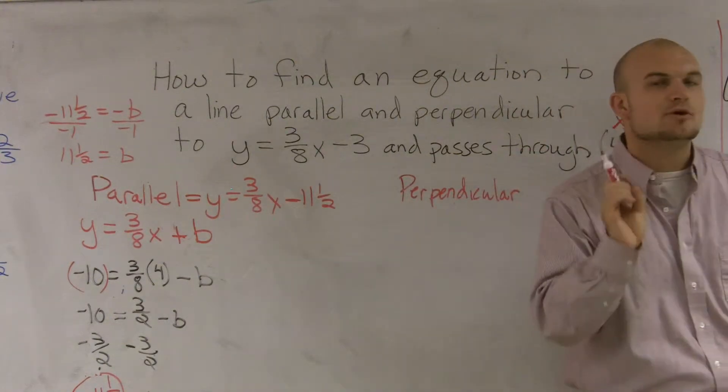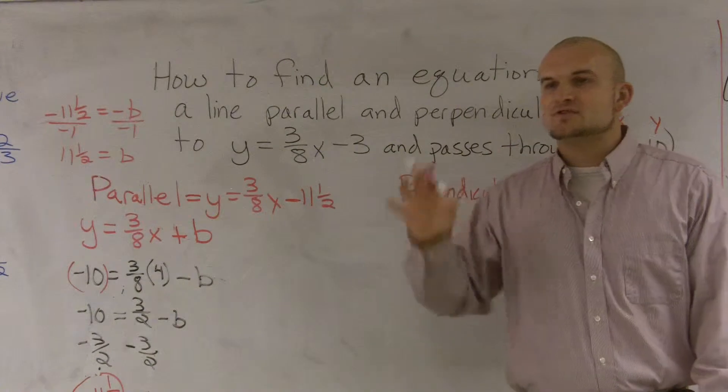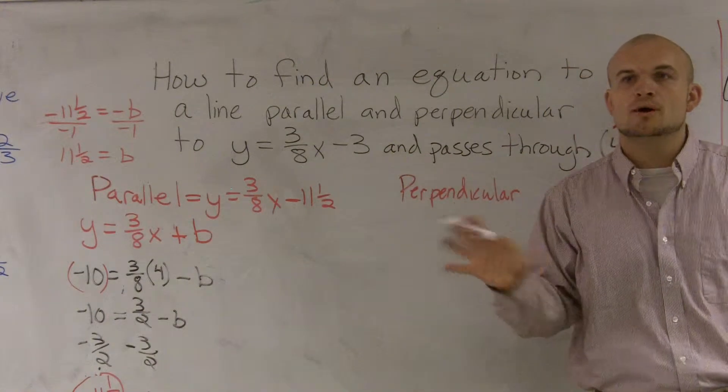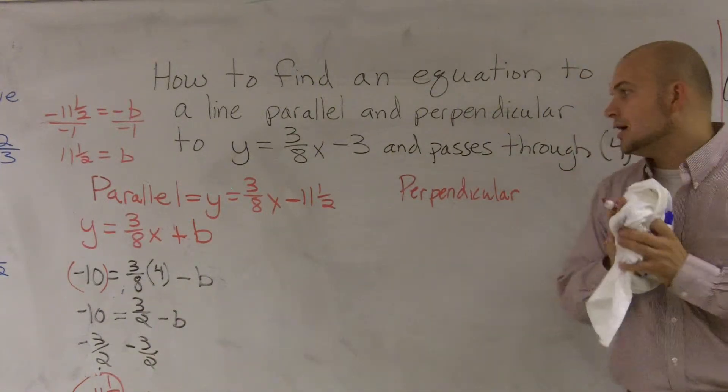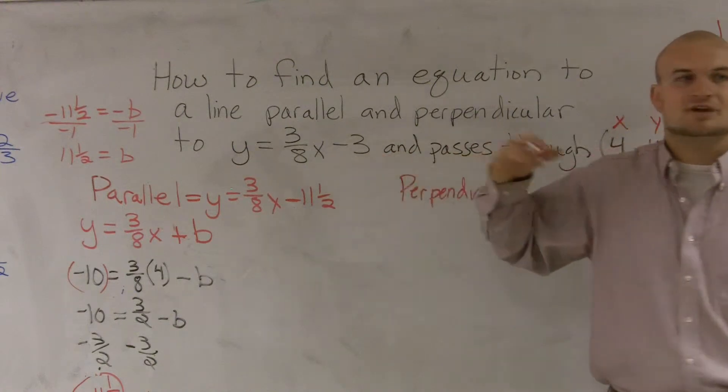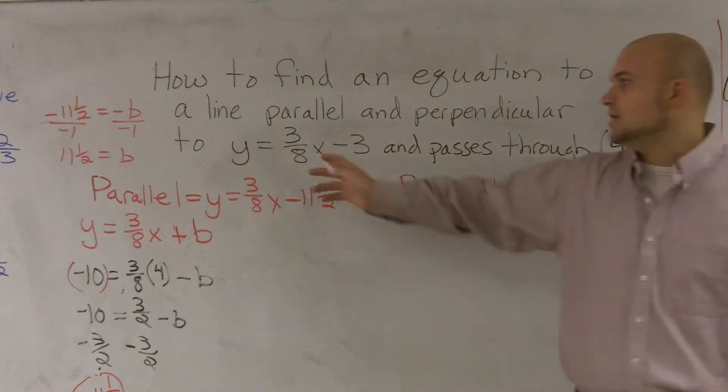Perpendicular lines, what we wrote down in our notes, is perpendicular lines have opposite reciprocal slopes. So before I write down my equation, I need to figure out what is the opposite reciprocal slope of 3/8.